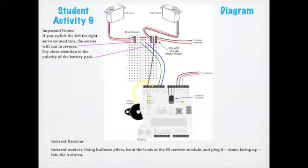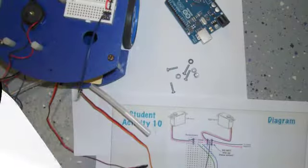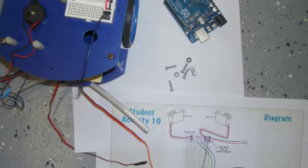In student activity nine, they'll begin wiring up all of the different parts to the breadboard. You need to be careful that the servos are wired correctly and that your power supply is plugged in correctly along with your ground. The IR receiver needs to be bent and then inserted into all the proper locations onto the breadboard.